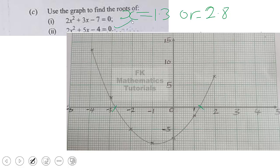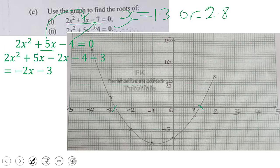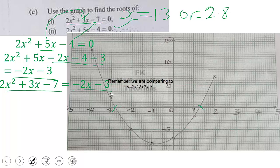For part (ii), the relation is 2x² + 5x − 14 = 0. We rewrite this to look like our original equation 2x² + 3x − 7. From 5x we subtract 2x to get 3x, and from −14 we subtract −7 to get −7. Whatever we do to the left-hand side we do to the right-hand side, giving us 2x² + 3x − 7 = −2x − 3.